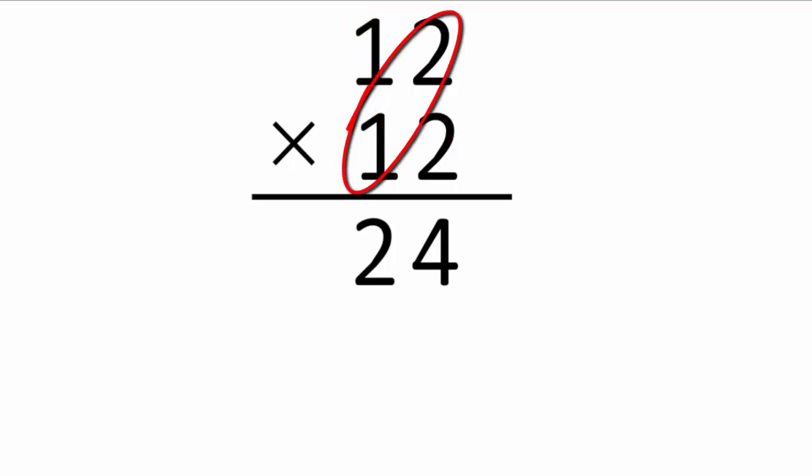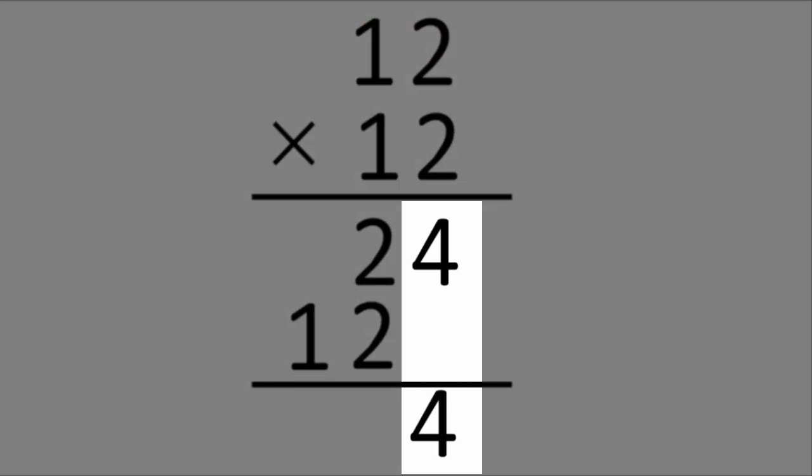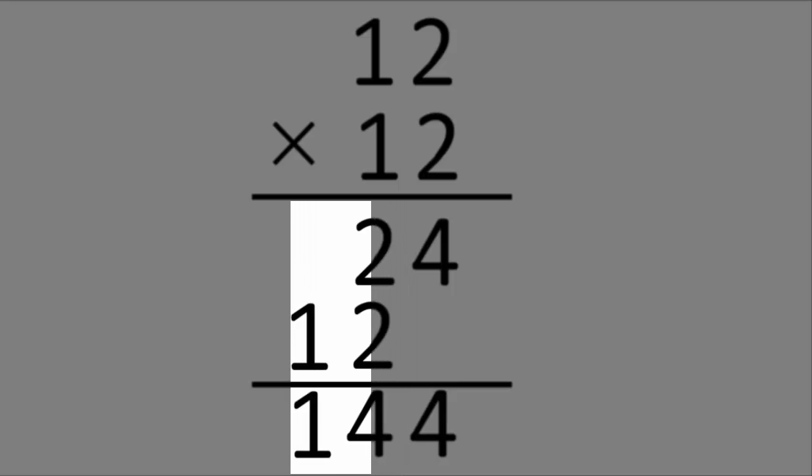1 times 2 equals 2. 1 times 1 equals 1. Now you add the columns and you get 4, 4, and 1. In other words, 144.